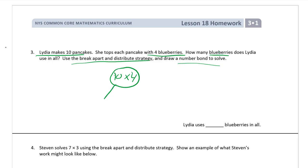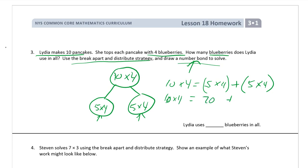This is just practice with easy numbers. 10 is easy to split into fives. So, five times four and five times four. Now we've drawn our number bond. The break apart and distribute strategy. We've got 10 times four equals five times four, that's the first leg here, plus the other five times four. That one there. Which equals 10 times four. Five times four is 20, plus this one is also 20. So, 10 times four equals 20 plus 20 equals 40. Lydia uses 40 blueberries in all.